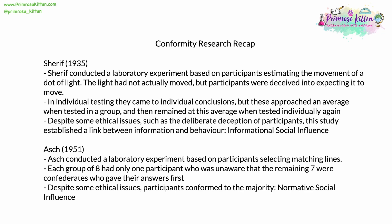Asch in 1951 conducted an experiment where participants selected matching lines from a series of options. A control group showed this was an easy task, with only 0.7% errors. Each group of eight had only one real participant, unaware that the remaining seven were confederates who deliberately gave incorrect answers first. Despite deception-based ethical issues, participants conformed to the majority, and Asch provided proof for normative social influence — people were basing their decisions on norms established in the wider group.